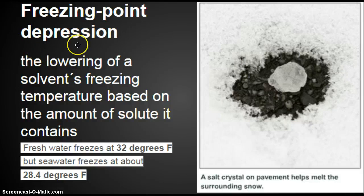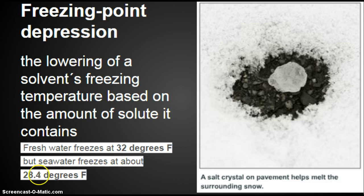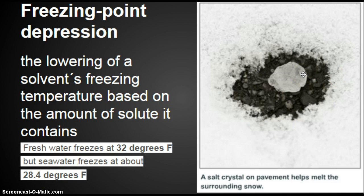Freezing point depression is the lowering of a solvent's freezing temperature based on the amount of solute it contains. Fresh water freezes at 32 degrees Fahrenheit. Ocean water has to get to 28 degrees Fahrenheit before it freezes — about a four degree difference. A salt crystal on pavement helps melt surrounding snow because it lowers the freezing point, about two degrees, but it still obviously makes a difference.